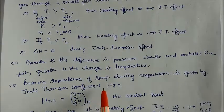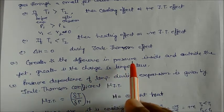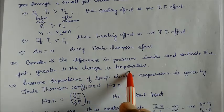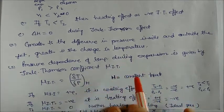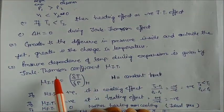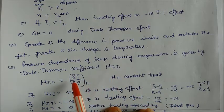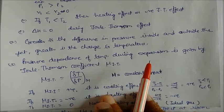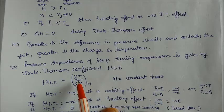Mu is the symbol for the Joule-Thompson coefficient. The greater the difference in pressure inside and outside the jet, the greater is the change in temperature. The pressure dependence on temperature during expansion is given by the Joule-Thompson coefficient, mathematically written as delta T upon delta P at constant enthalpy. If the Joule-Thompson effect is positive, this means a cooling effect: both T2 minus T1 and P2 minus P1 are negative.